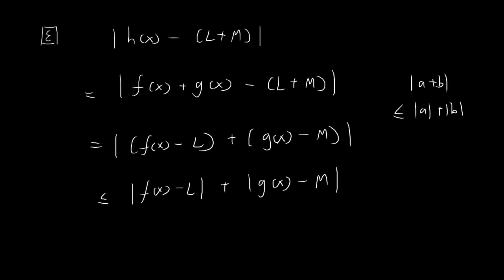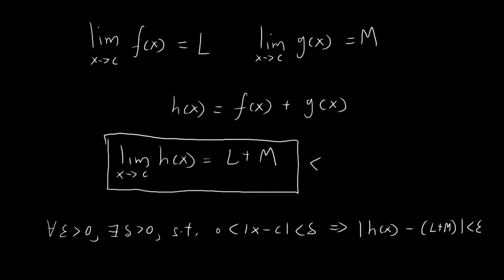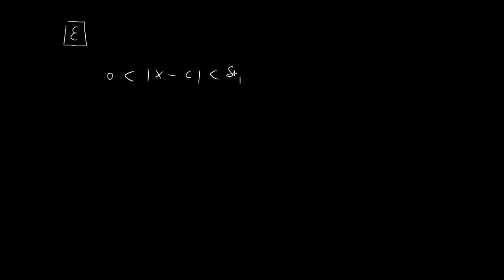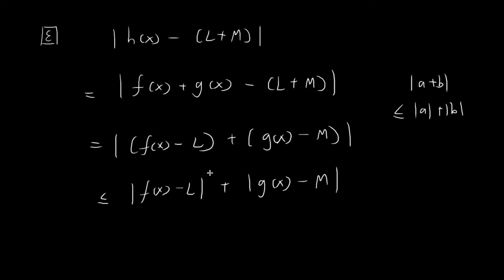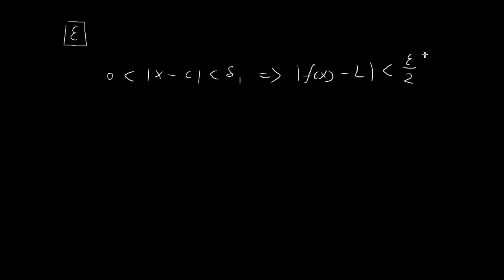The existence of these two limits implies that for whatever value of epsilon, there must exist a number delta 1, such that if x is within a distance of delta 1 away from c, this implies that f of x will be within a distance of epsilon over 2 away from l. You might wonder why I divide epsilon by 2 — the epsilon-delta definition says no matter how small I make this term I can always find such a delta, so dividing by 2 is perfectly valid. You'll see in the end why we need this.